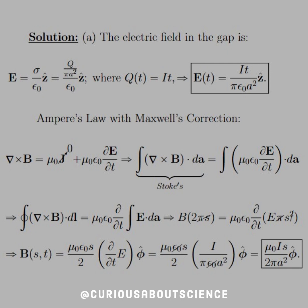Alright, let's dive on in. The electric field in the gap is E equals sigma over epsilon. So sigma here is Q over pi A squared. Run that through, and we see that Q of T equals I times T. So E of T equals IT over pi epsilon naught A squared Z hat. And then Ampere's law with Maxwell's correction. So Maxwell-Ampere law is the curl of B. Clearly in the gap, we don't have any current density, so J goes to zero.